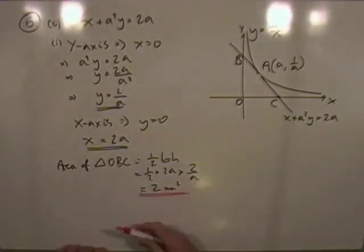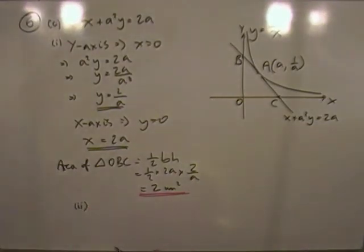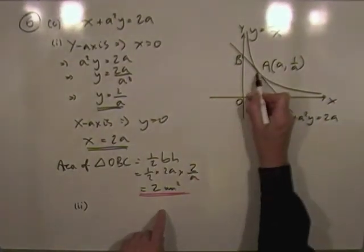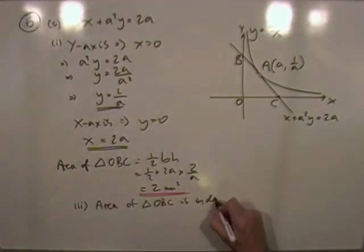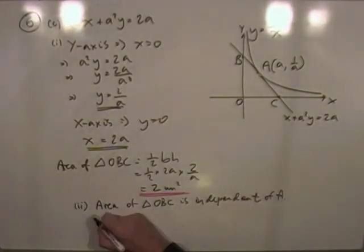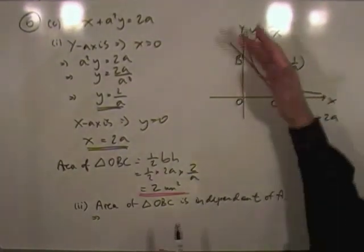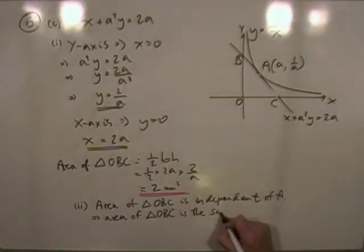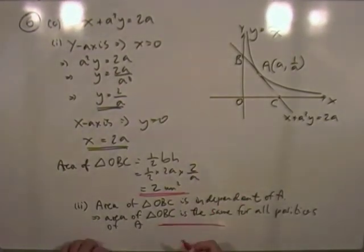Part d asks for a comment on this answer. The key observation is that a does not appear in the result — the area is always 2 square units regardless of where A is on the curve. This means the area of triangle OBC is independent of the variable a: no matter where the tangent touches the curve, the triangle it forms with the axes always has the same area.